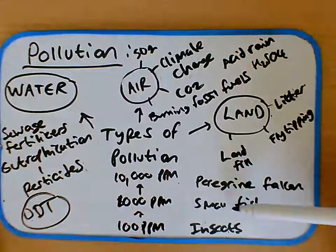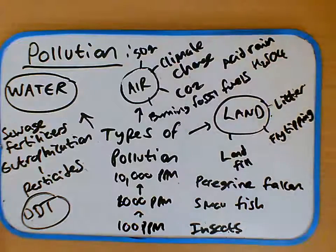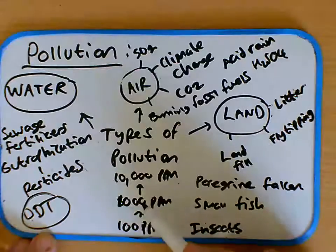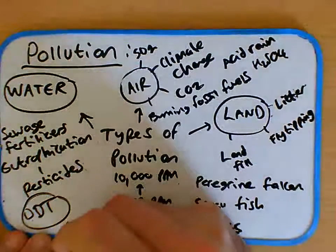Because as the peregrine falcon ate the fish, the more fish it ate, the more the chemical built up. It stayed in the body of the falcon. Now this process here, this building up, this accumulating of the pesticide is known as bioaccumulation.